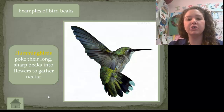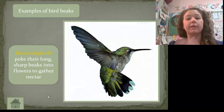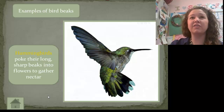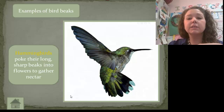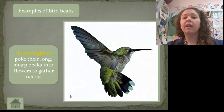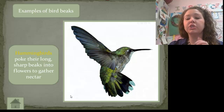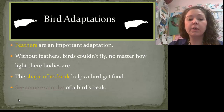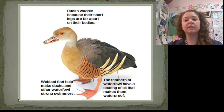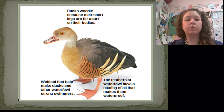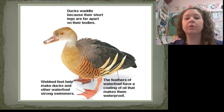The finch's beak couldn't spear fish — it's not long enough. Here's a hummingbird: its beak is even skinnier and pointier, and that allows it to get nectar out of flowers. So you can see the shape of the beak determines what kind of prey it hunts and what it eats.